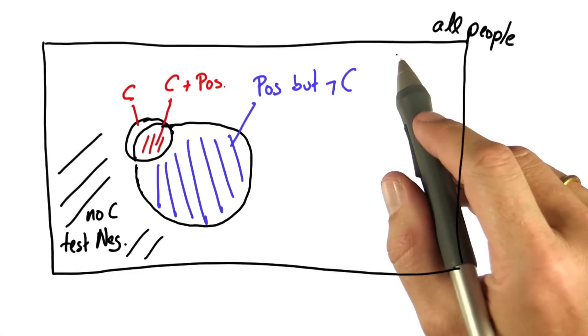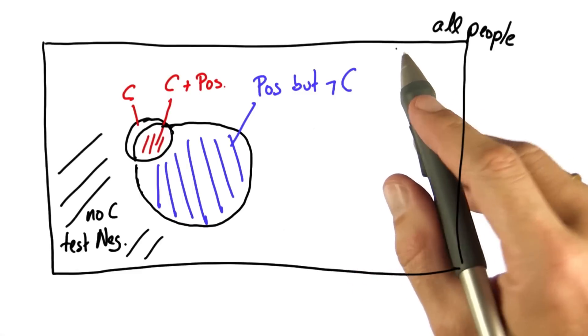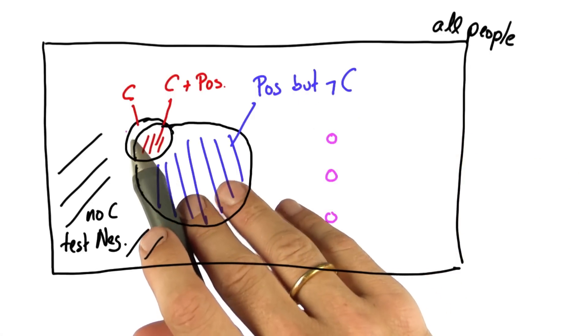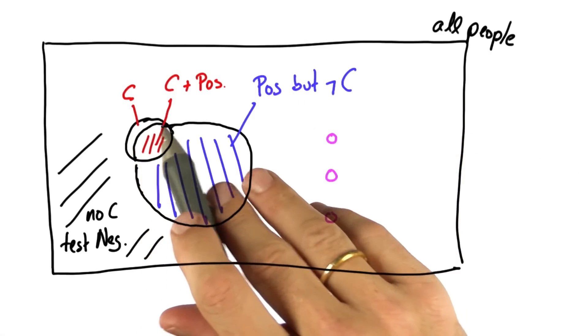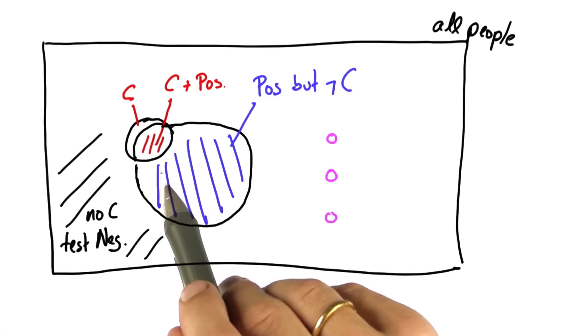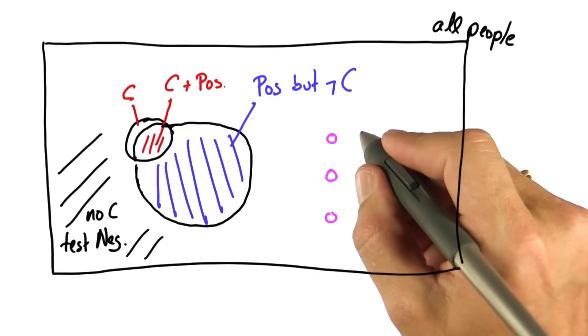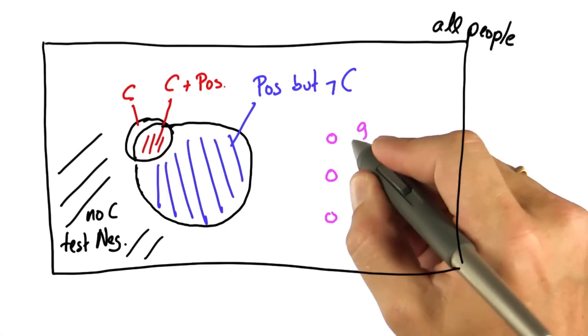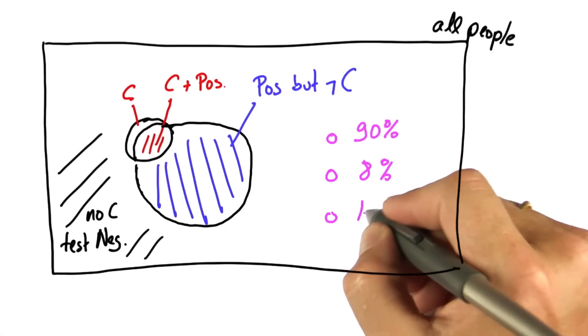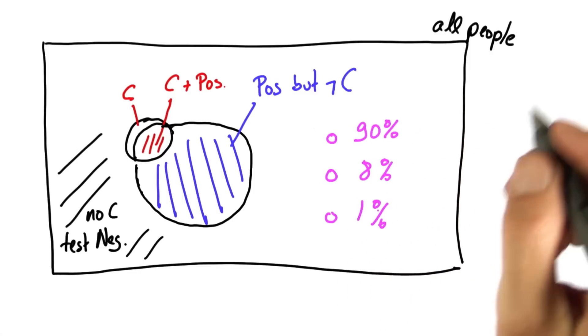So let me ask you again. Suppose you have a positive test. What do you think? With a prior probability of cancer of 1%, a sensitivity and specificity of 90%, do you think your new chances are now 90%, 8%, or still just 1%?